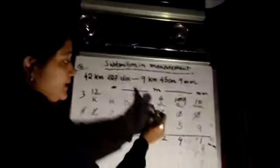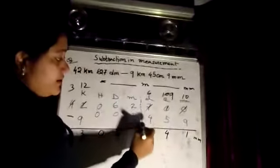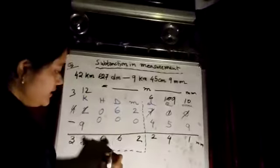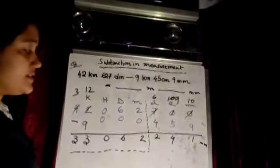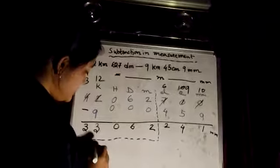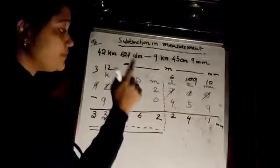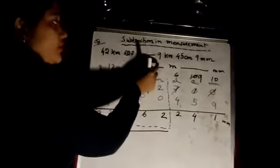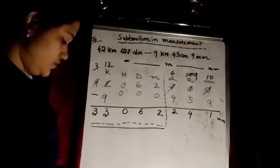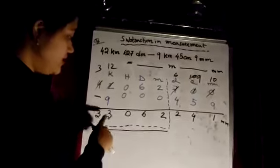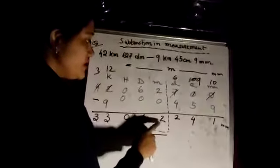So from that portion after meter, I should put the slash like this. Which portion is there inside the slash? That is 3, 3, 0, 6, 2. That portion I need to write down in the meter section. So let us write it down: 3, 3, 0, 6, 2.